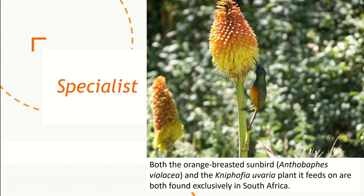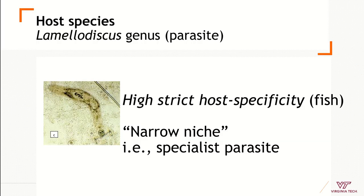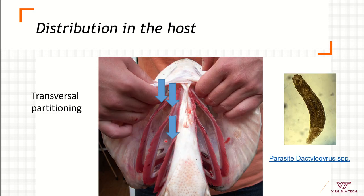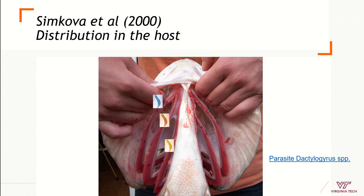We are very familiar with this from ecology, but in terms of diseases we can also apply this to parasites. There are some parasites that are specialists, restricted to one host species, so they have a narrow niche. For example, this parasite lives specifically in the gills — not randomly across the gills — it could be on one side, and different species can occupy different gills.